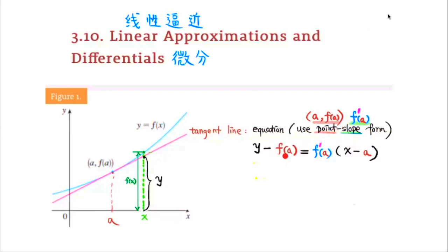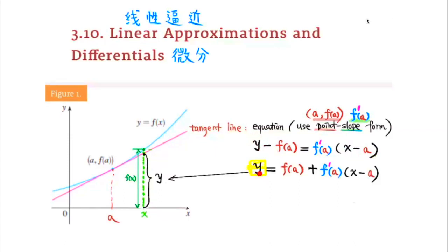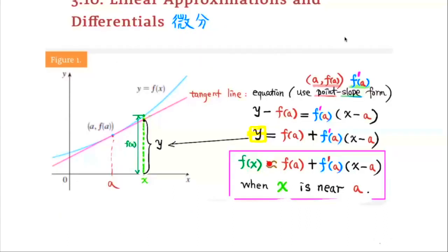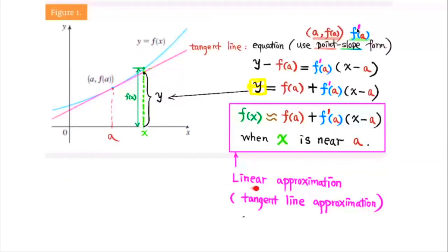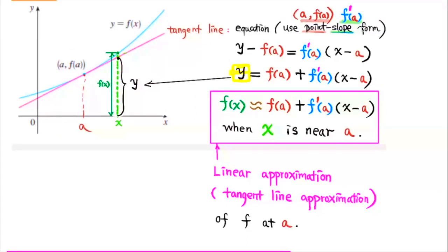So we get y minus f(a) is equal to f'(a) times the quantity x minus a. Isolating y, we get y equals f(a) plus f'(a) times the quantity x minus a. When x is near a, this y will be a good approximation to the actual function value f(x). So we can say f(x) is approximately equal to f(a) plus f'(a) times the quantity x minus a, when x is near a. This is called a linear approximation, or tangent line approximation, of f at a.